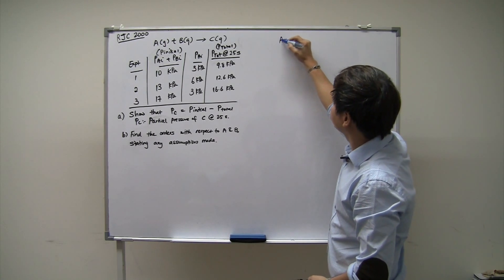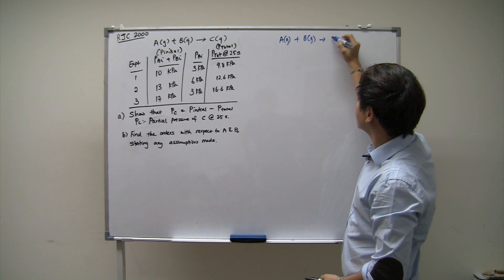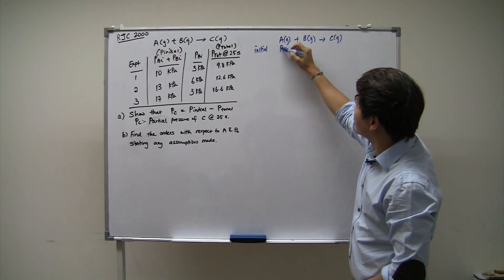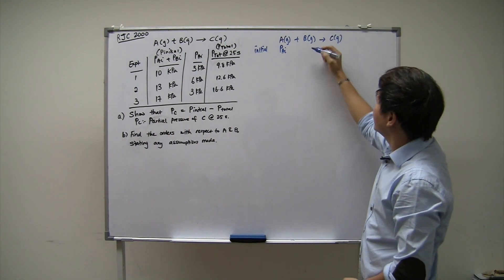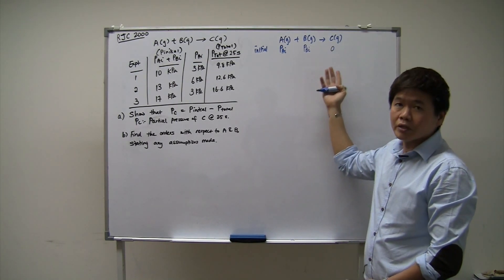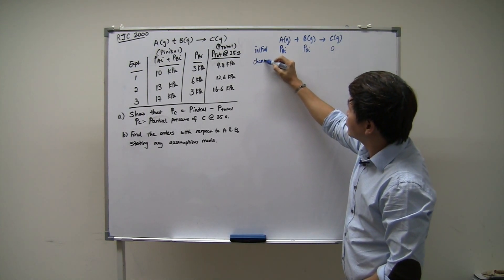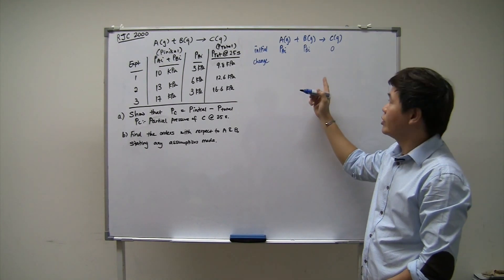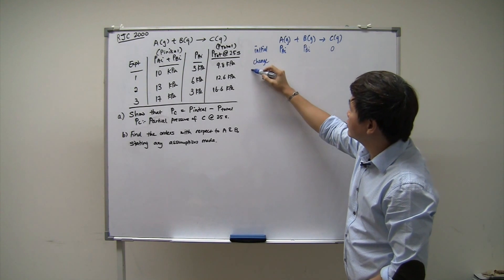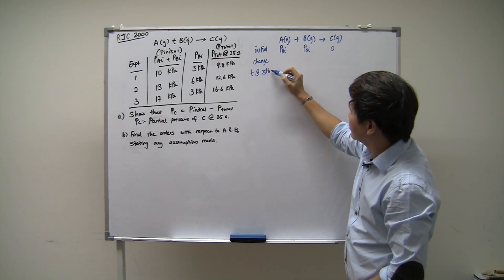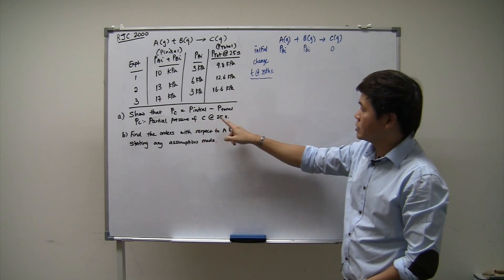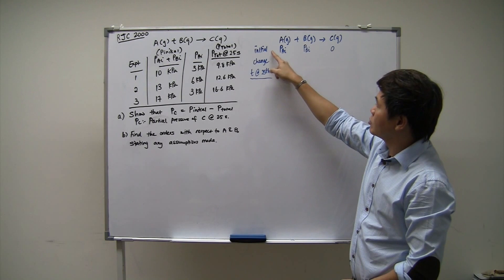If you take a look at the reaction A plus B gives C, initially the partial pressure of A is PAI (initial pressure of A), and the initial pressure of B is PBI. The initial pressure of C is assumed to be zero because there's no information given. This table is similar to what we've learned in chemical equilibrium, but it can be used for any time frame - it doesn't need to be a reversible reaction. This represents the change in pressure from the beginning until the 25th second, which is the time frame we're looking at.